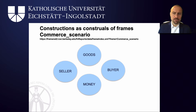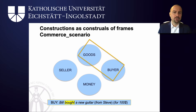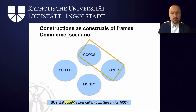What particular verbs do — like for example 'buy' — is focus and foreground certain participants. So 'Bill bought a new guitar' shows us that 'buying' taps into the commerce scenario frame and particularly foregrounds the buyer and the goods, which are then realized as subject and object. Other elements like the seller ('from Steve') or the money ('for $100') can be added as extra adverbials, but the core construal of 'buy' is focusing on goods and buyer.